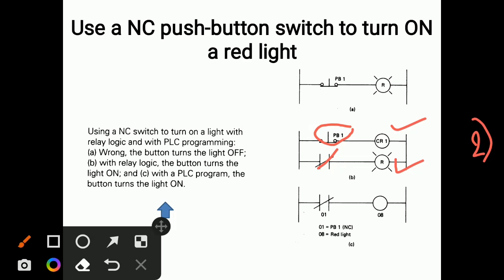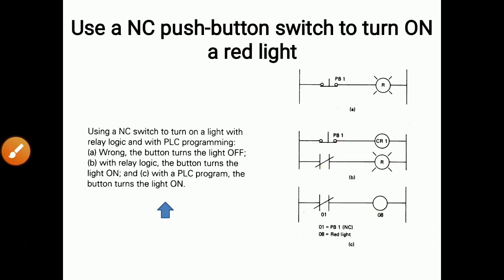Condition C: with a PLC program, the button turns the light on. The red light has a PLC address of 08, and the normally closed push button switch has a PLC address of 01. With this push button switch, the light turns on through the continuous straight-line process in the PLC program.